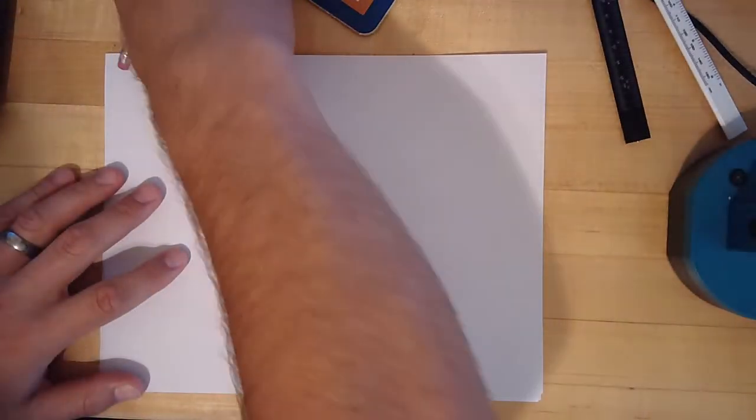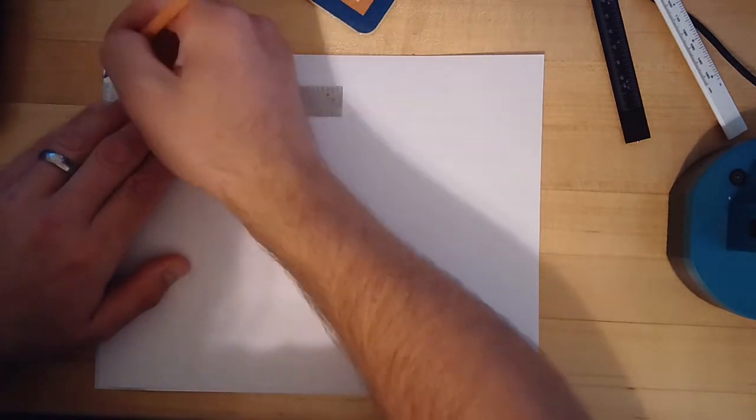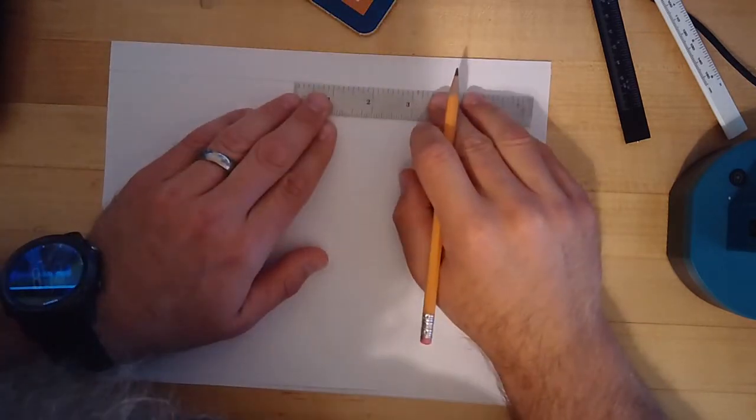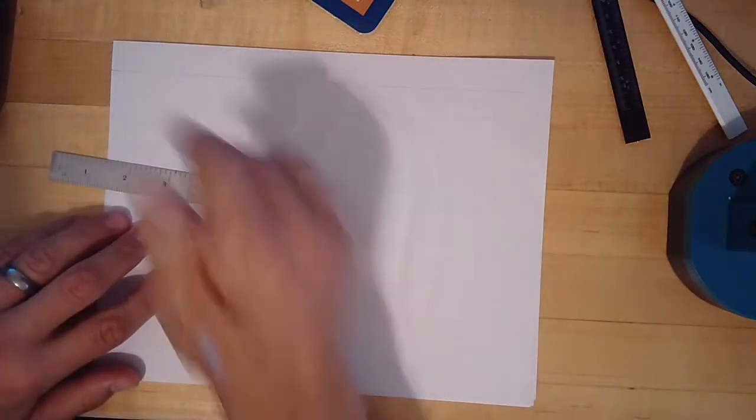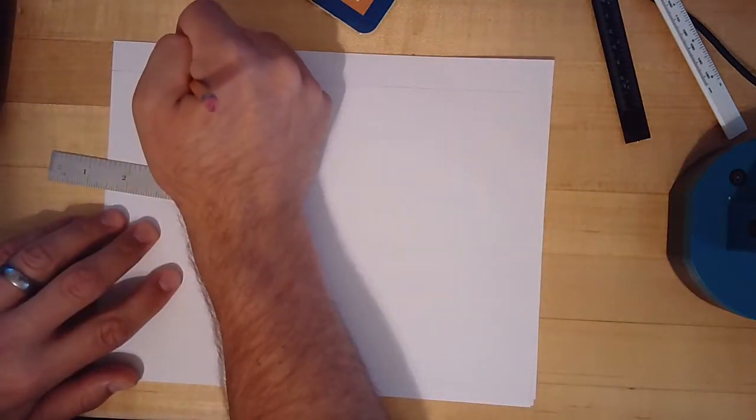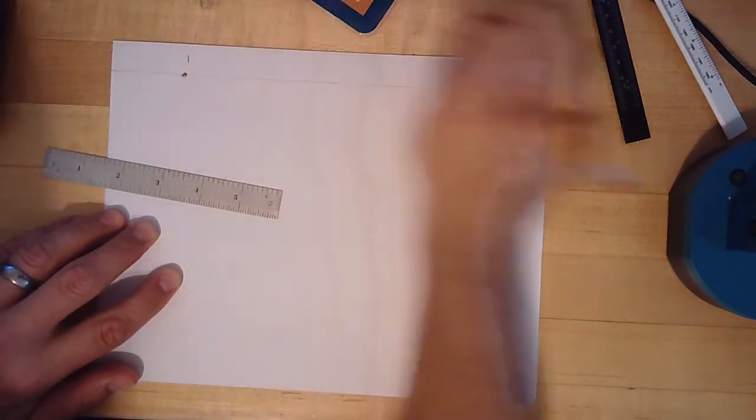So first thing I'm going to do is always for kind of random self-generated drawing is draw that horizontal horizon line across the top of my page. I'm going to throw in two vanishing points on that line that we always have. One, two.